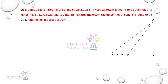5 by 12 से tangent क्या हो गया — 3 by 4। हमें जो है वो height of the tower, means AB का length निकालना है। और CD मेरे पास क्या दिया हुआ है — 192 meter।